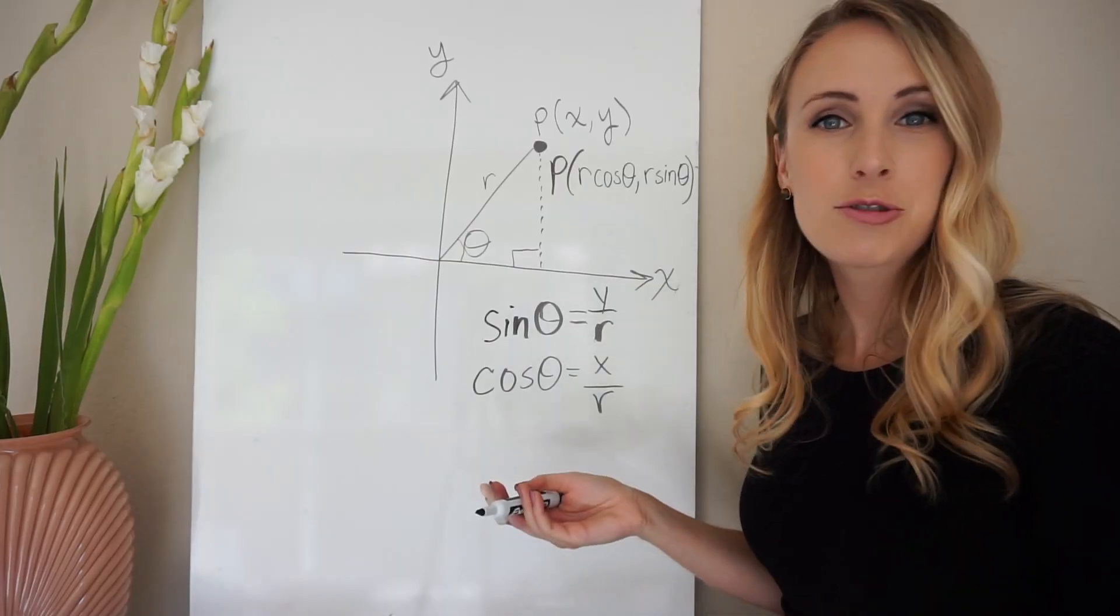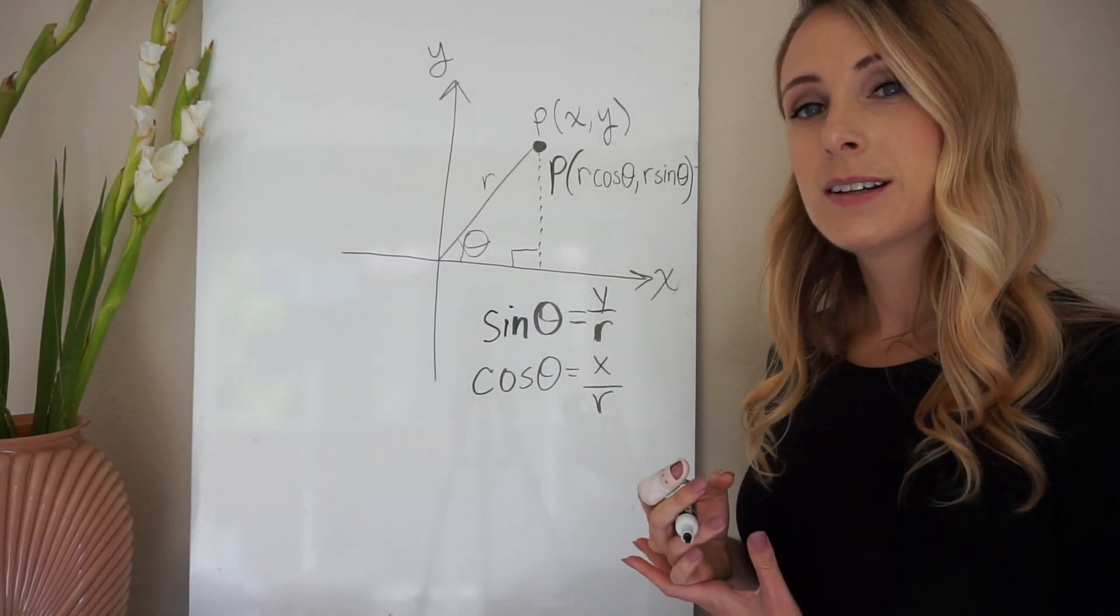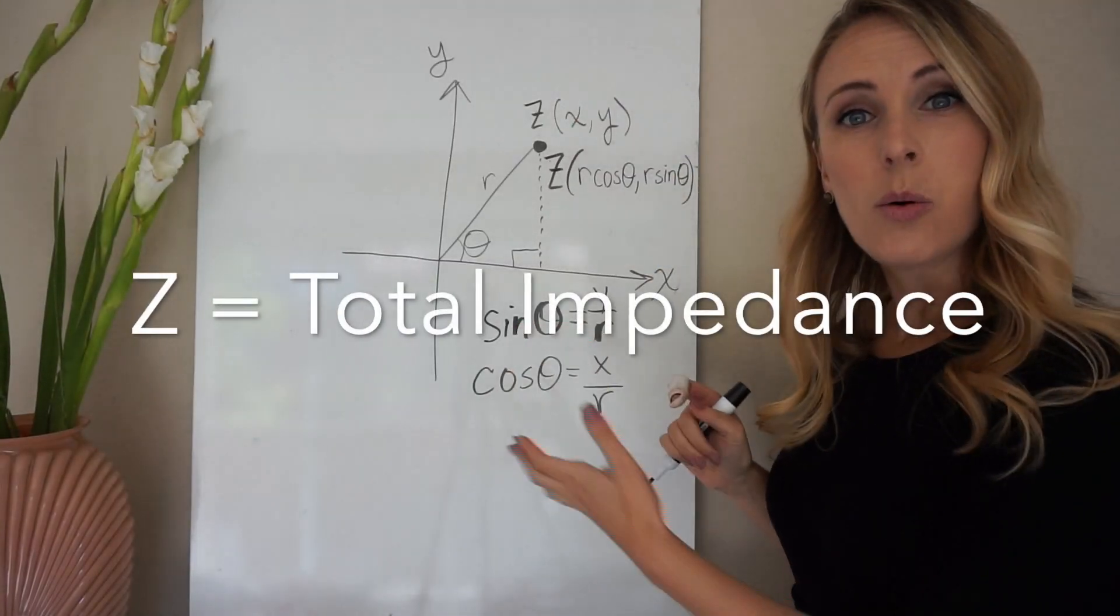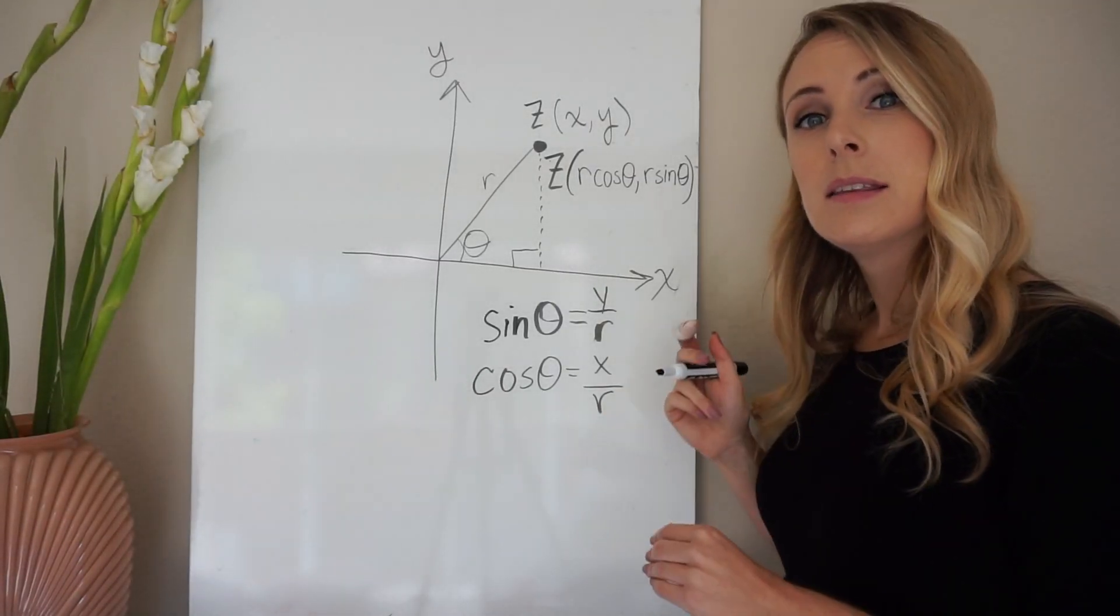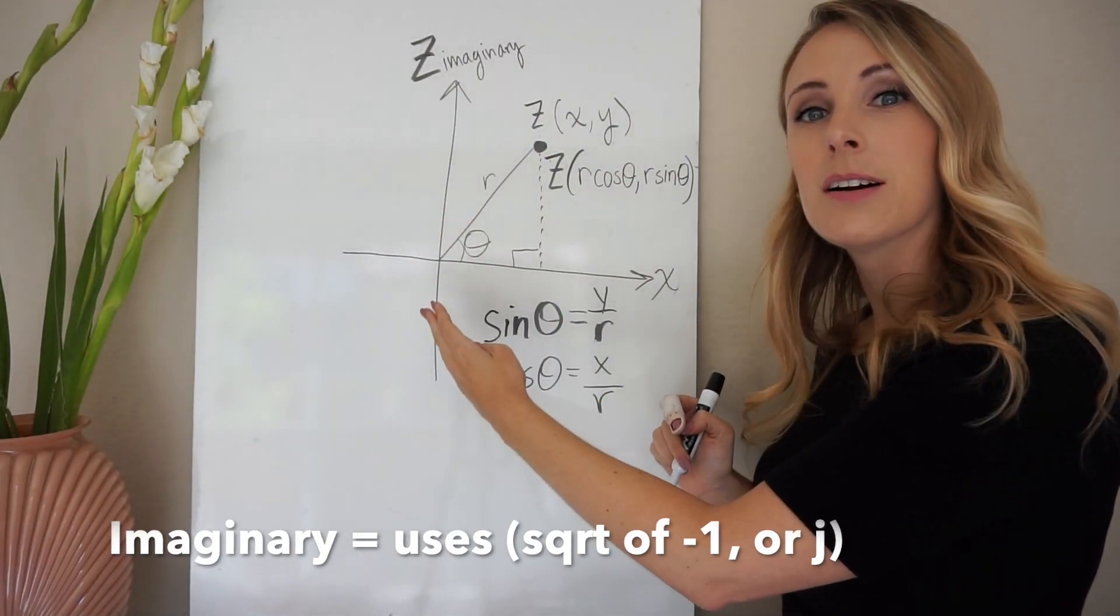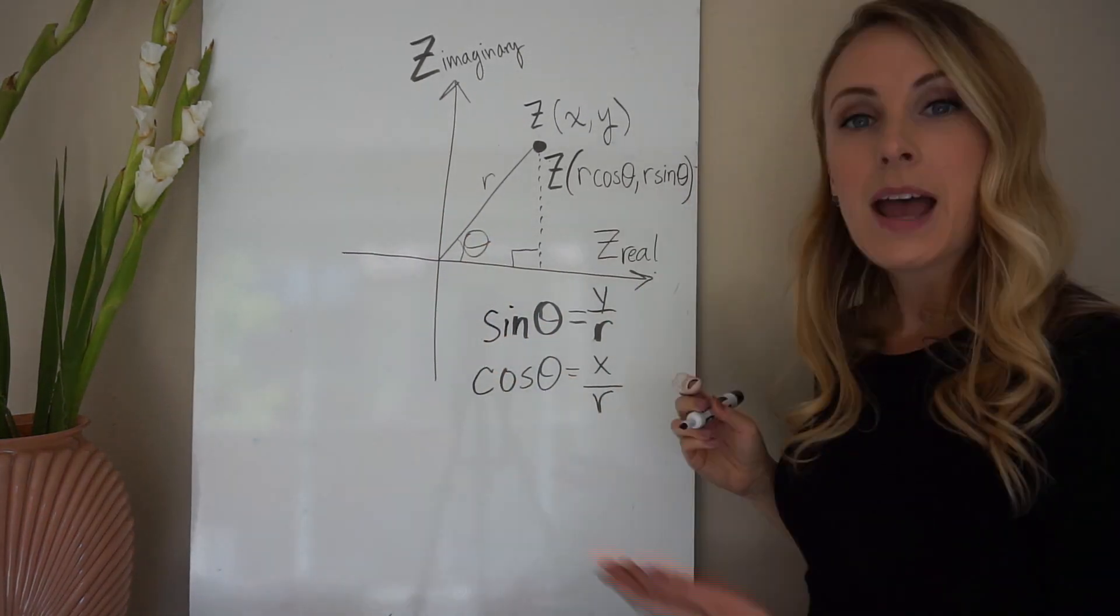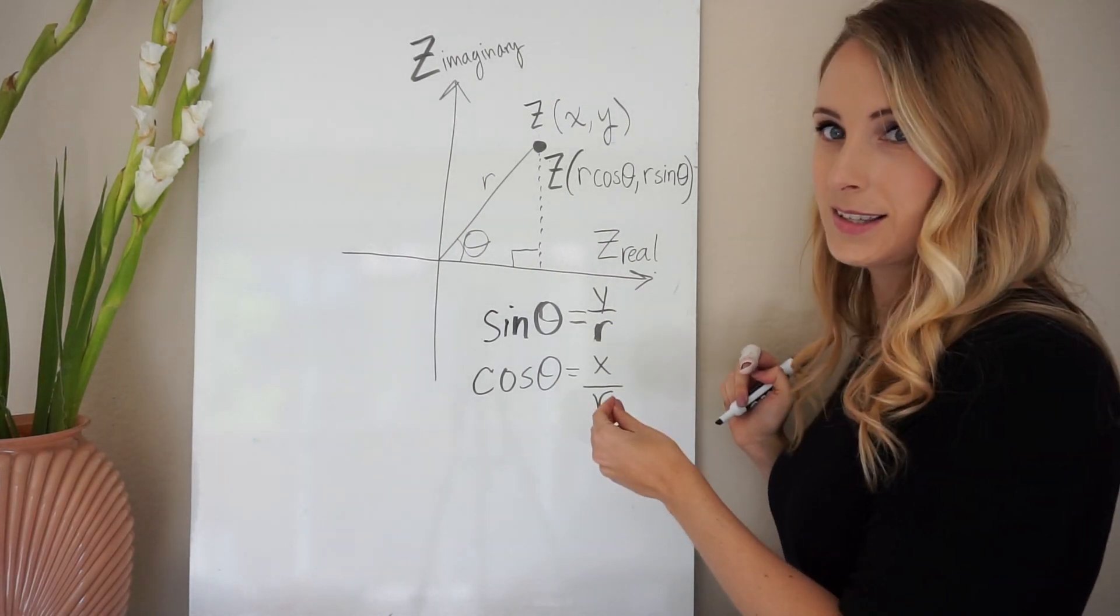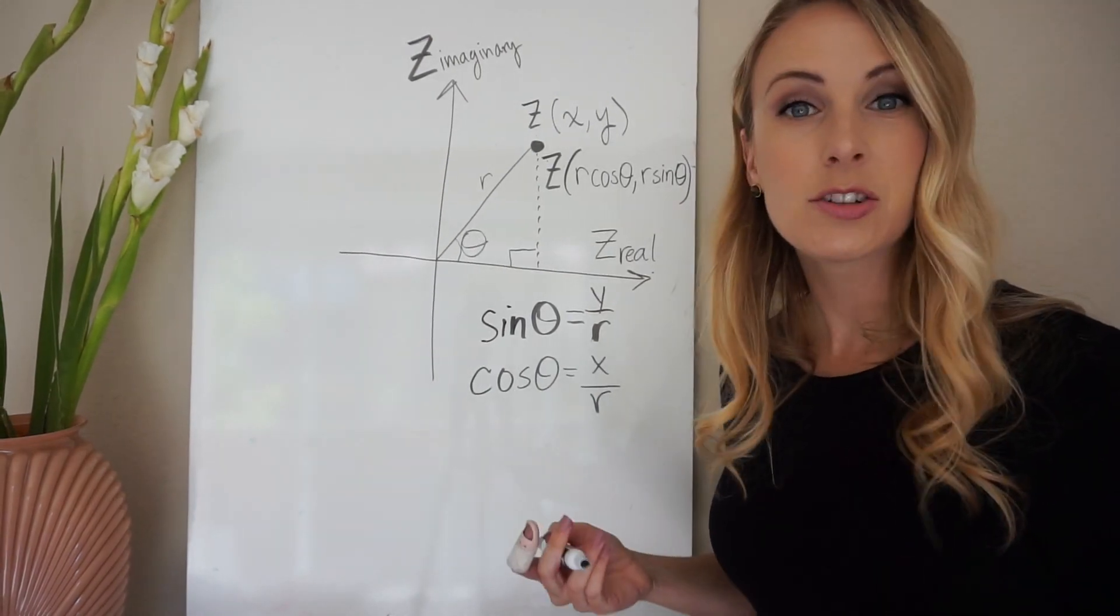So now, if we're actually thinking about doing this EIS measurement, then point P will actually be z, or the measured total impedance. And instead of x and y, the axes are changed. The y-axis becomes the imaginary, yes, imaginary impedance axis. And the x-axis becomes the real impedance axis. Impedance is composed of a real and imaginary component. Now we're talking about electrical engineering.